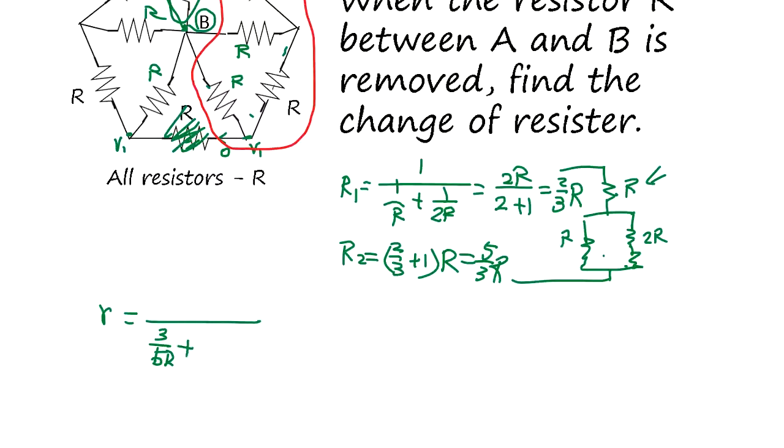Plus 3 over 5R plus 1 over R, right? So if you multiply by 5, it's going to be 3 plus 3 plus 5, which is 5 over 11R.